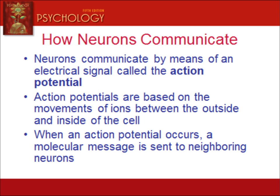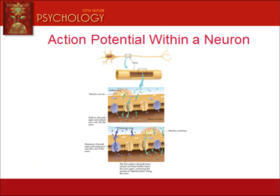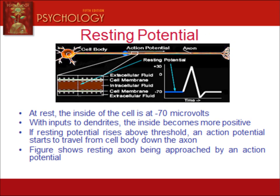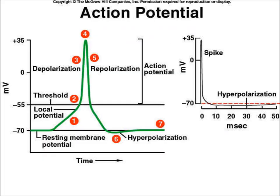A neuron can communicate electrically and chemically. Electrical communication occurs when brief electrical impulses, called action potentials, are produced by the movement of electrically charged particles, called ions, across the membrane of the axon. The resting potential is the state in which a neuron is prepared to activate and communicate its message if it receives sufficient stimulation. For an action potential to be produced, stimulation must be above the stimulus threshold — the minimum level of stimulation required to activate a particular neuron. All of this happens in just one to two thousandths of a second. Neurons either respond or they don't — this principle is referred to as the all-or-none law.